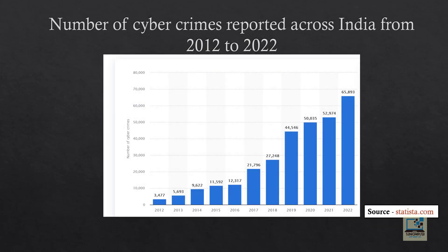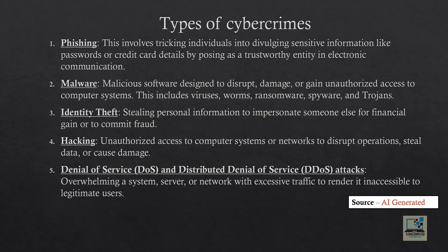If you look at this graph, this is data from Statista.com showing the number of cyber crimes reported across India from 2012 to 2022. Back in 2012, the number of cyber crimes reported was 3,477. That number has now changed to 65,893 in just 10 years — that is almost 20 times increase within 10 years. So what are the types of cyber crimes?